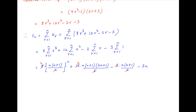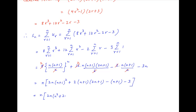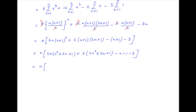This can be written as n times 2n(n+1) minus 3. And this is equal to n times [2n(n² + 2n + 1) + 2(2n² + 3n + 1) − n − 1 − 3], which simplifies to n times [2n³ + 4n² + 2n + 4n² + 6n + 2 − n − 4].